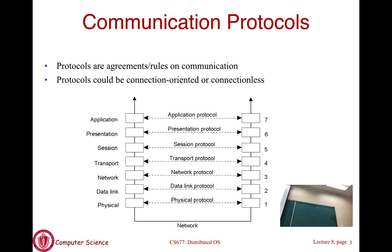The network layer allows machines to communicate even without a direct link between them. Intermediate nodes called routers forward messages via routing protocols. In TCP/IP, the IP layer is the network layer—it handles addressing and routing, with routers using routing protocols to forward packets hop by hop until they reach the destination.